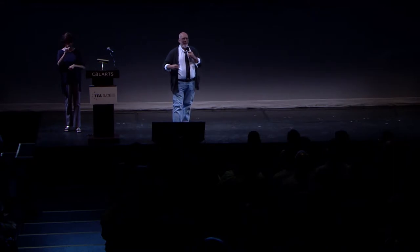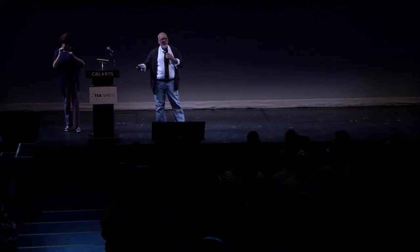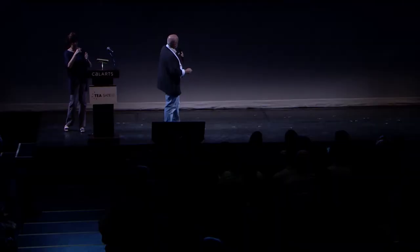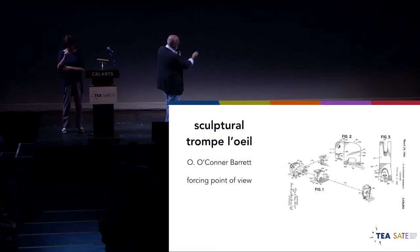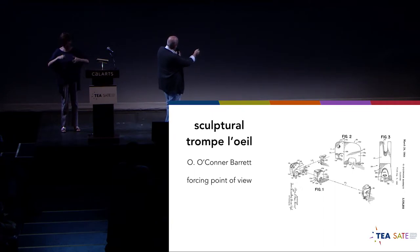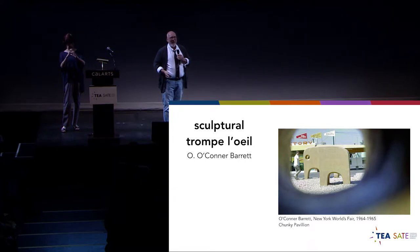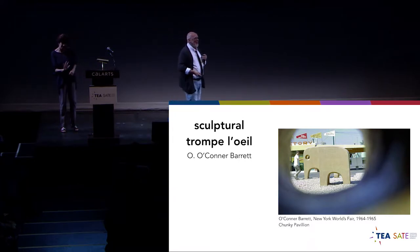Another form of trompe l'oeil is sculptural. This actually stems back to one of my seminal experiences — I attended the New York World's Fair in 1964 and 1965, and that shaped my brain. There were sculptures there by the artist O'Connor Barrett that took advantage of three-dimensional trompe l'oeil. These concrete blobs are unrecognizable, but when you look through the viewpoint, all the pieces line up and you see an animal. As a five-year-old, I was so overwhelmed by this. I'm sure it changed the way I perceived the world. Art does have that impact on us — these experiences change our minds, they change the way we think. Our industry is so incredibly influential.